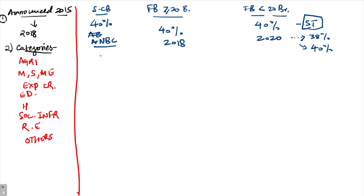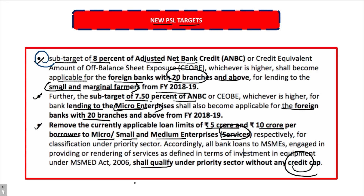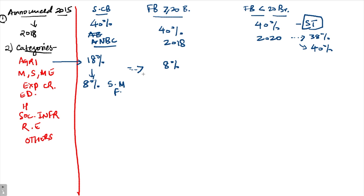The first sub-target is for agriculture: 18% of adjusted net bank credit, out of which 8% is to be provided to small and marginal farmers — to be achieved by March 2017. This 8% sub-target is now applicable to foreign banks with 20 branches and above from financial year 2018-19.